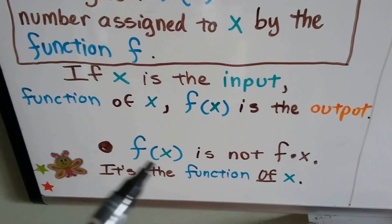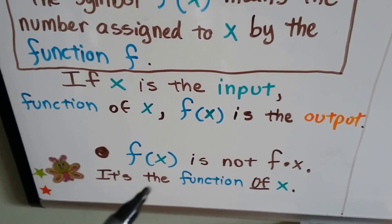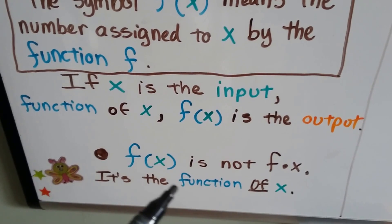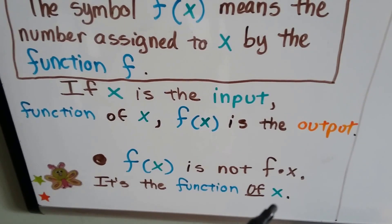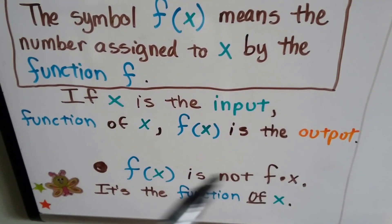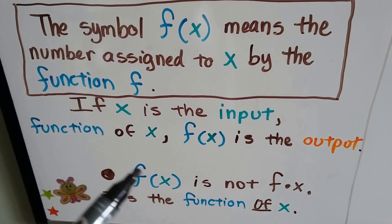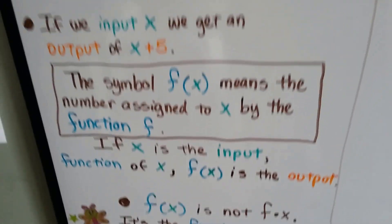You're going to have to be careful because when you see this, it does not mean f times x. It means the function of x, like f of x, like a fox. So don't think you multiply these two together. This is not like a variable. It means function.